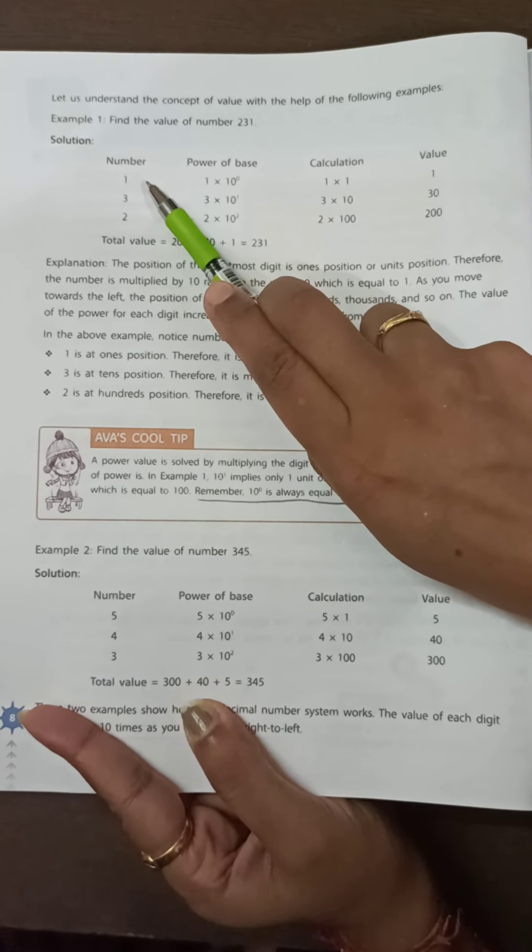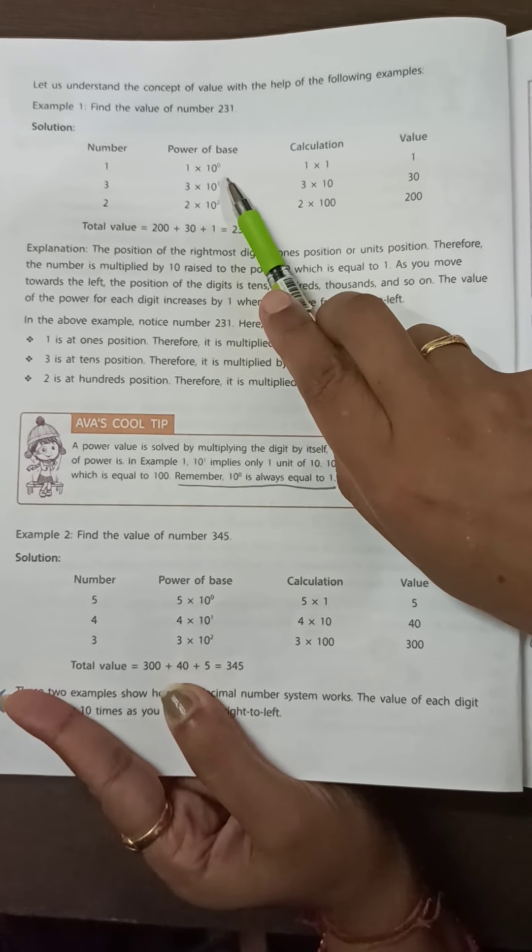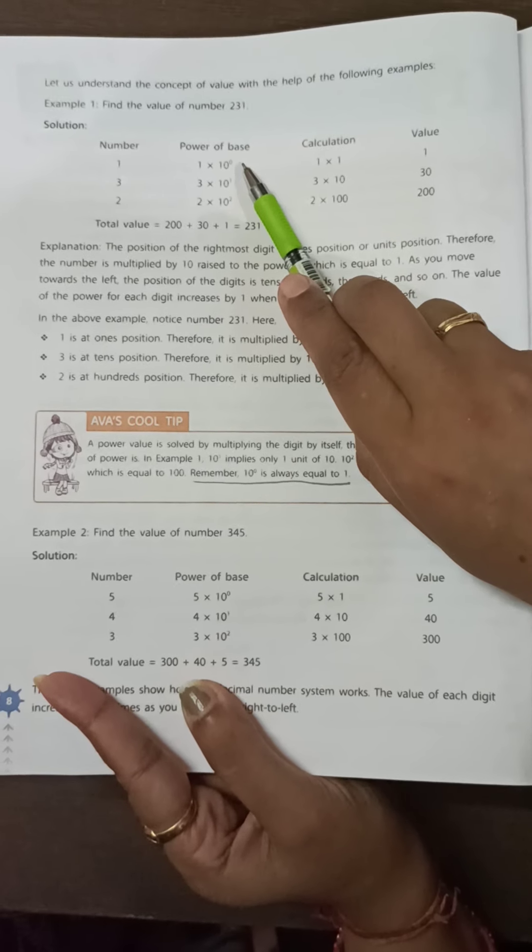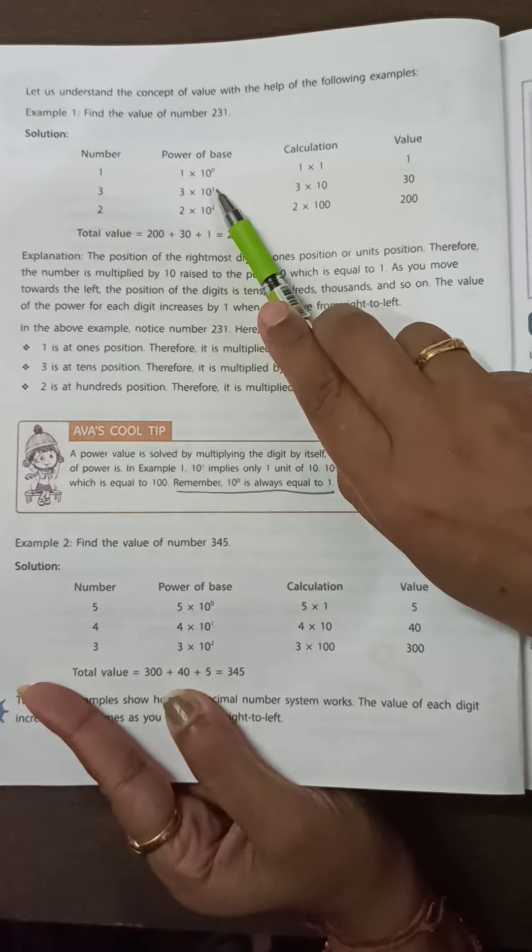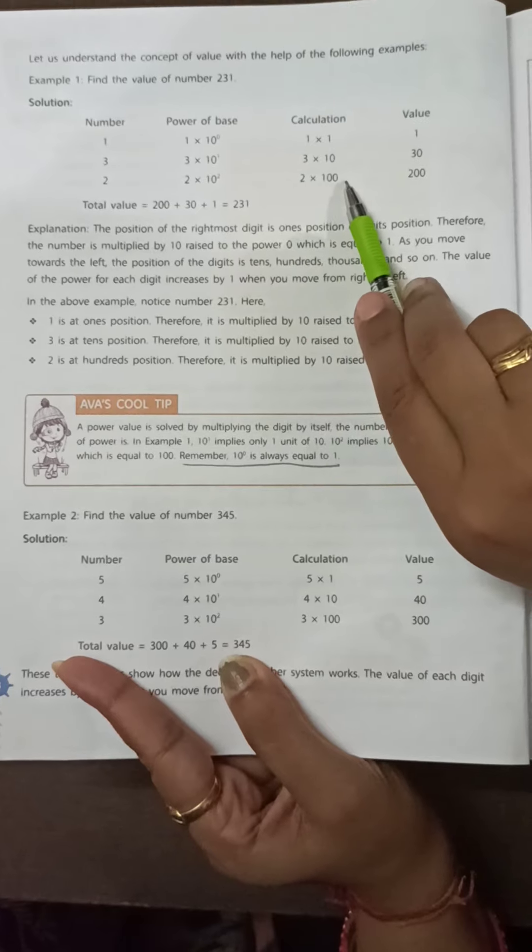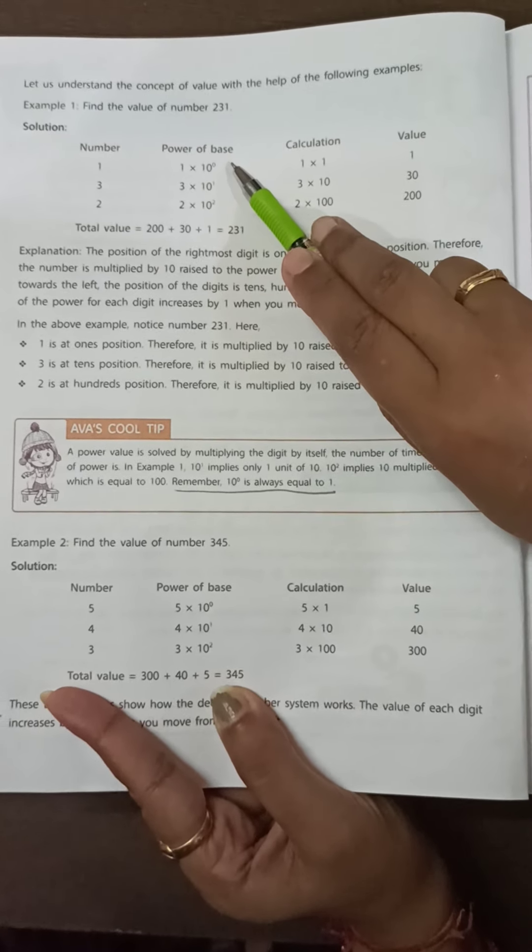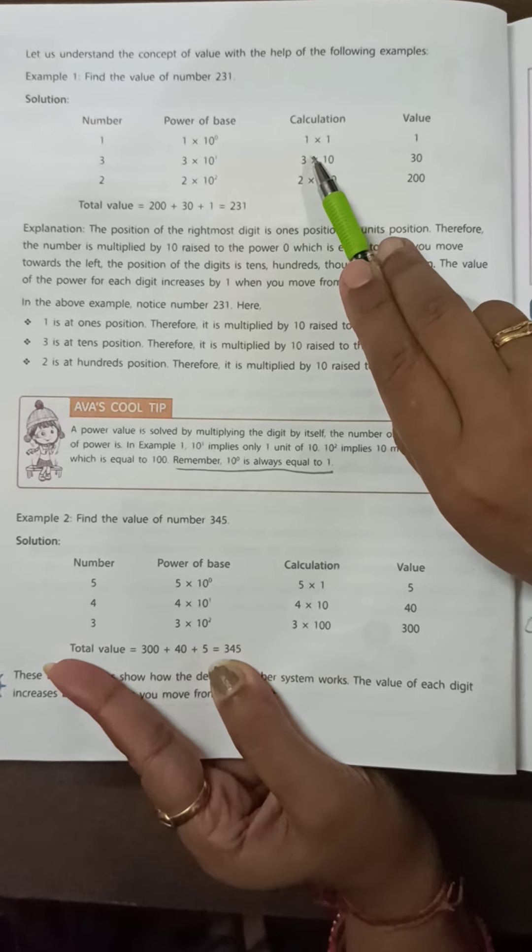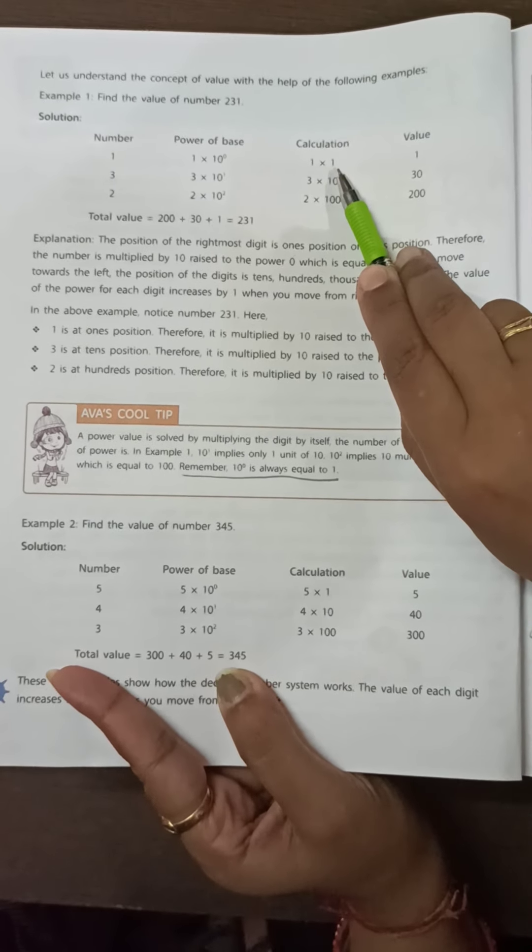We have to write firstly 1, then 3, then 2, and the power of base 10. 10 means decimal number system, and the power starts from 0: 10 to the power 0, 10 to the power 1, 10 to the power 2. 10 to the power 0 equals 1, so we put 1 here for doing the calculation.